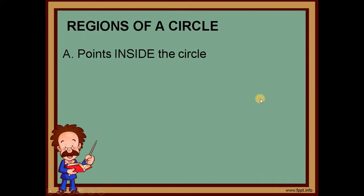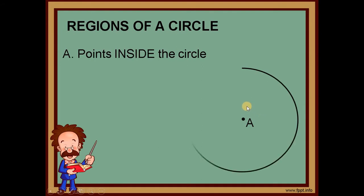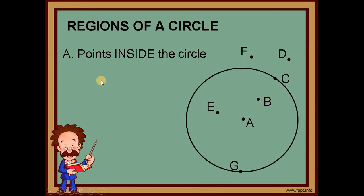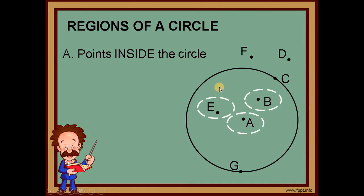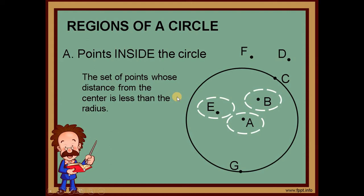Let's start with points inside the circle. Let's have circle A — draw a circle and then insert some points: D, E, F, and G. Points inside the circle — in Tagalog, ito yung mga points na nasa loob ng circle. In this case, those are point E, point A, and point B. The formal definition: these are the points whose distance from the center is less than the radius.